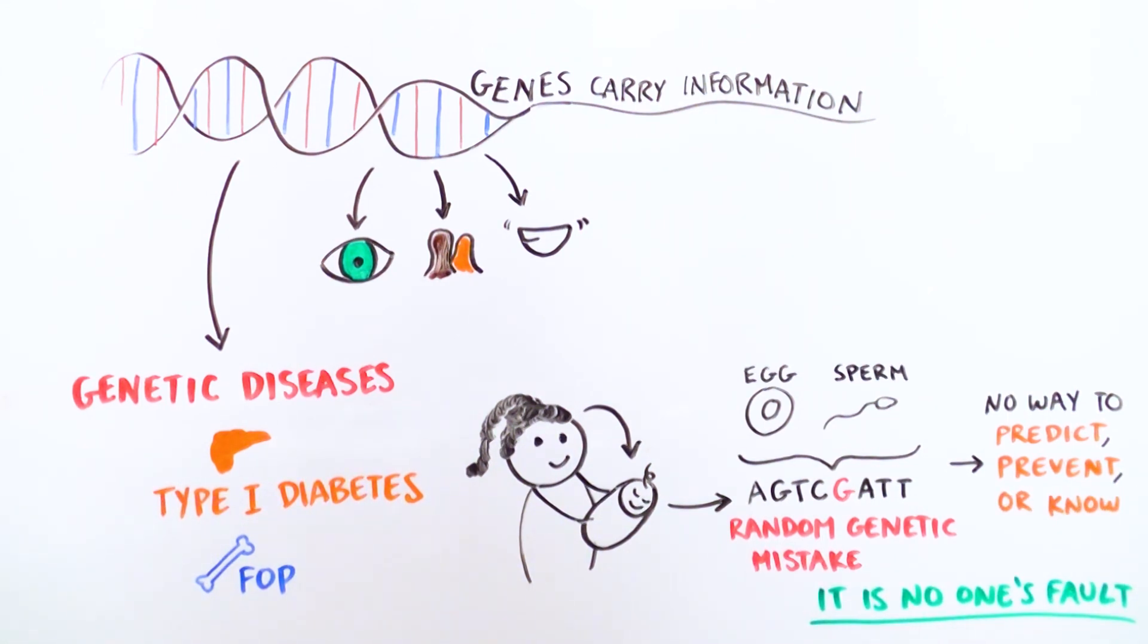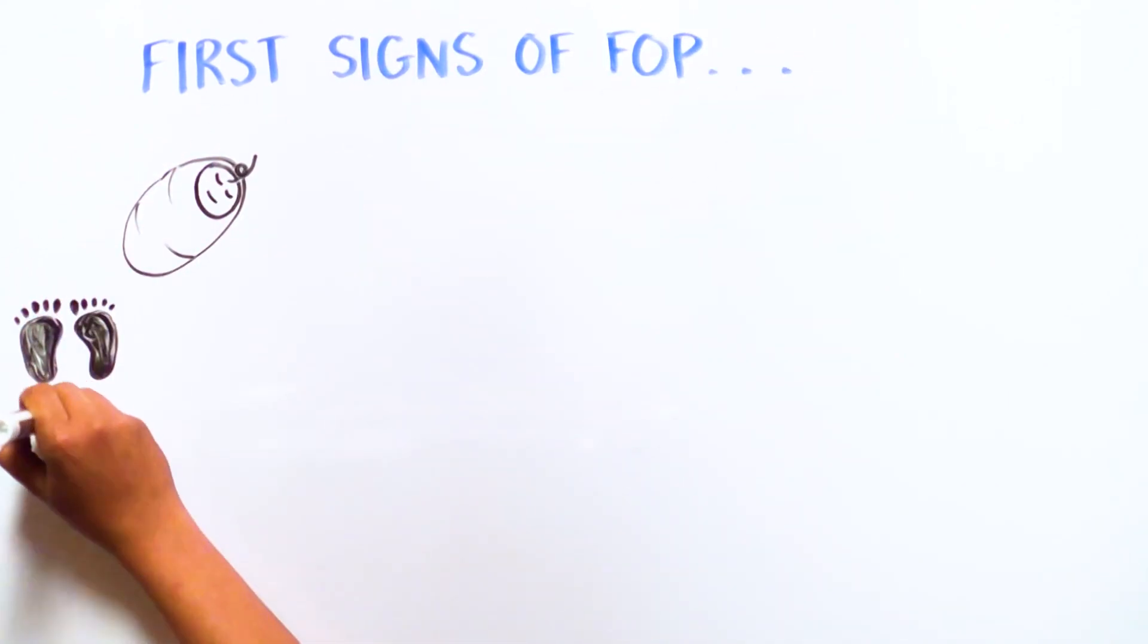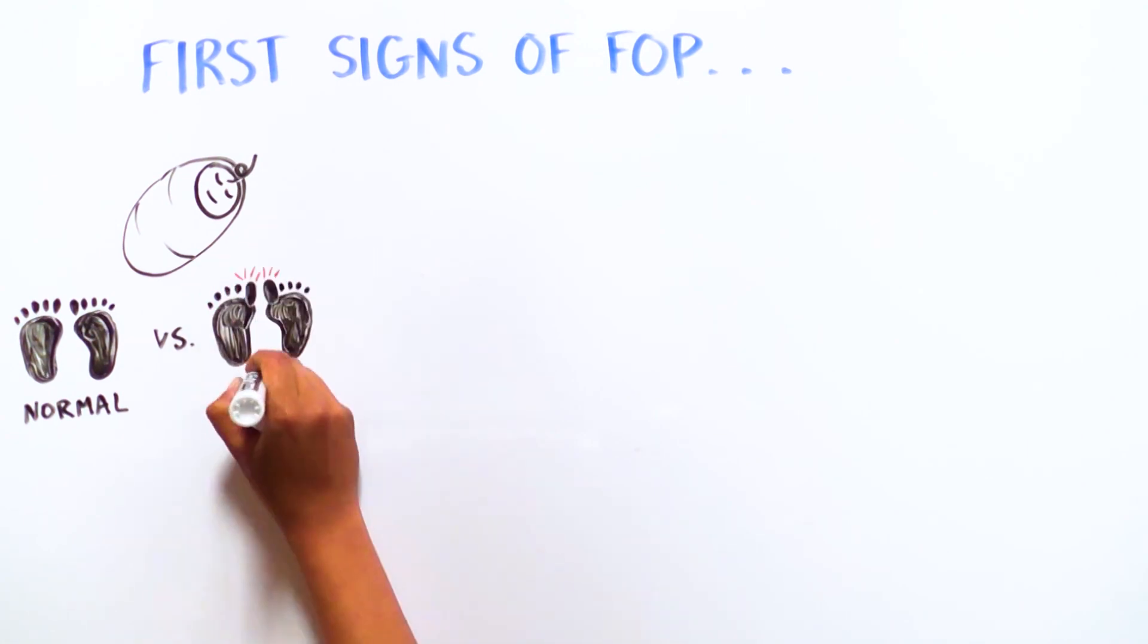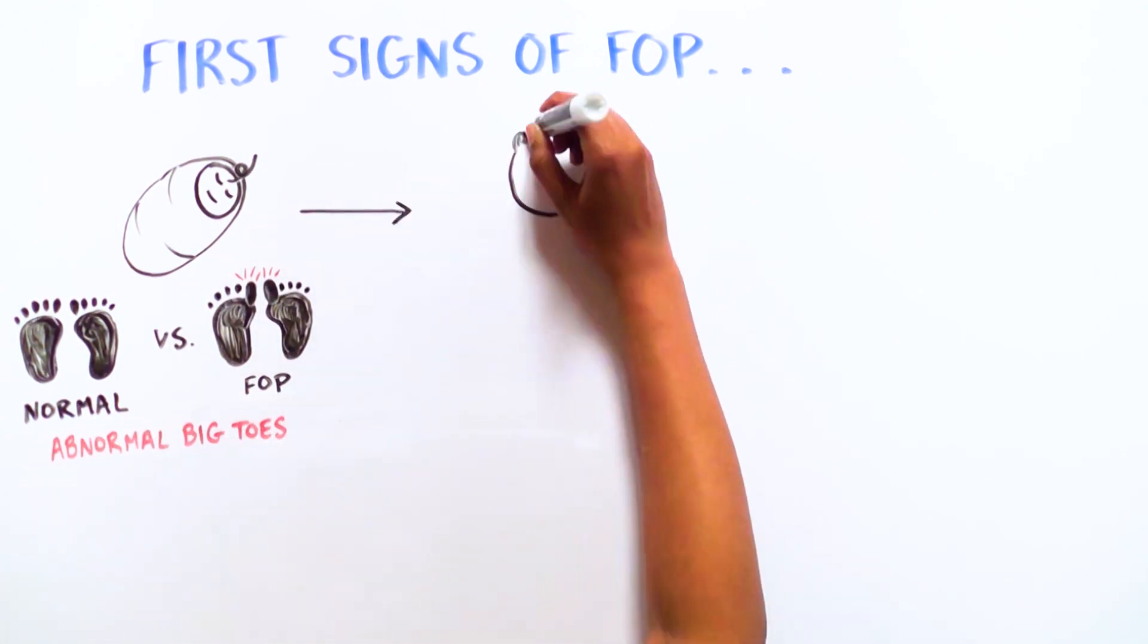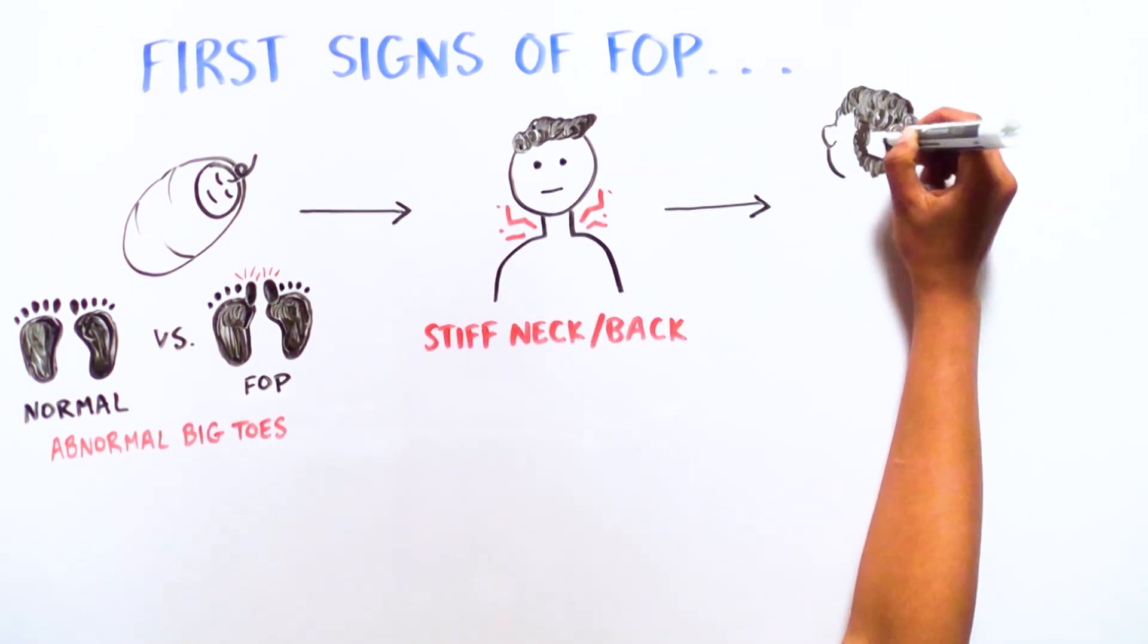What are the first signs of FOP? First, children born with FOP usually have abnormally formed big toes. Many have stiff necks and backs, making it difficult to crawl and look up, so they quickly learn to scoot on their bottoms to see where they are going.